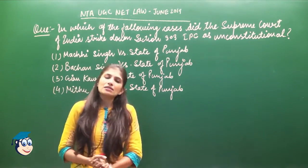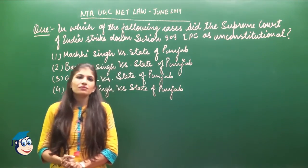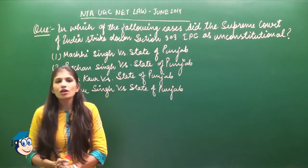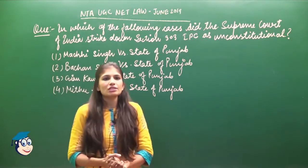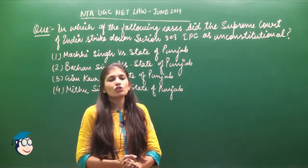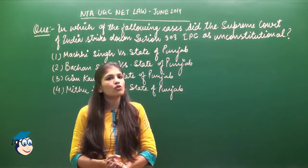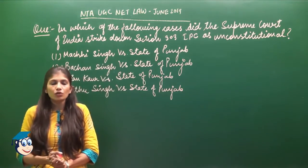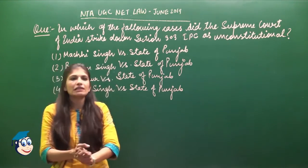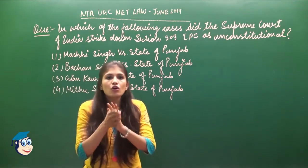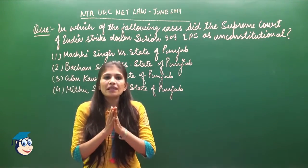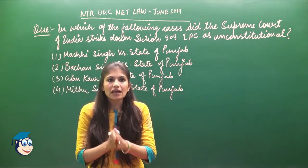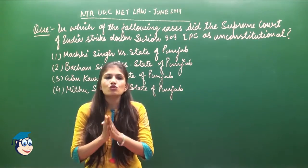The answer is Mithu Singh versus State of Punjab — this is the case in which Section 303 IPC was declared unconstitutional by the Supreme Court.